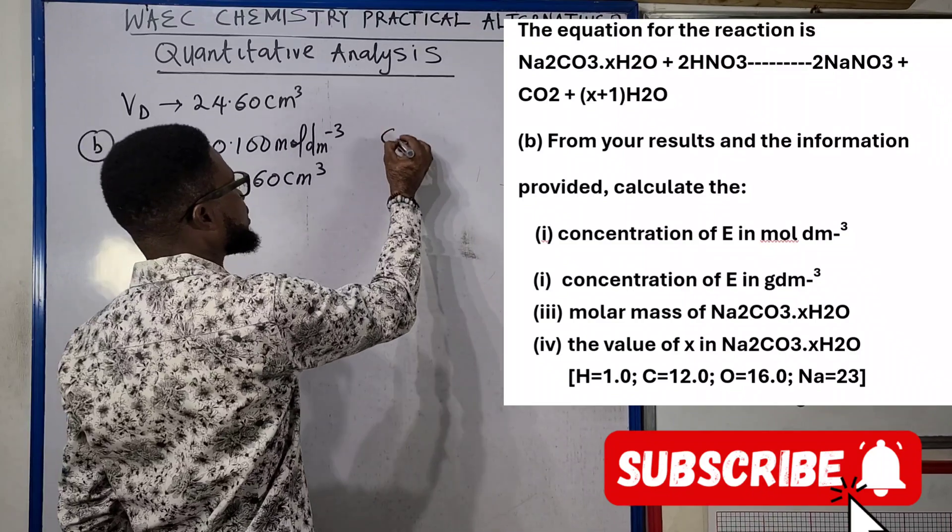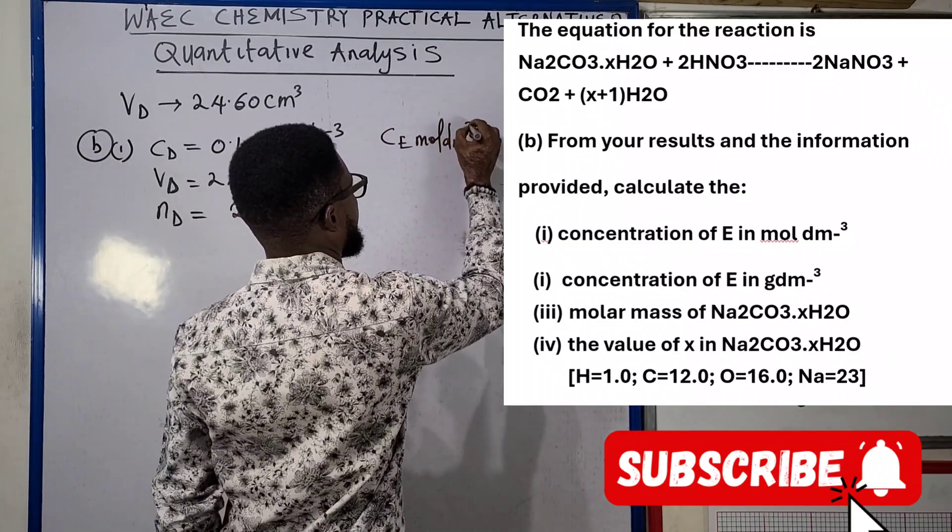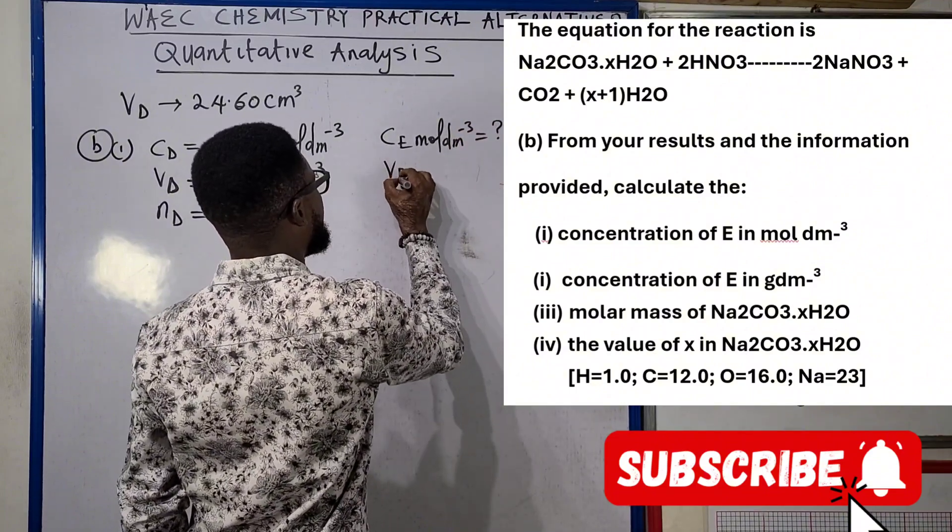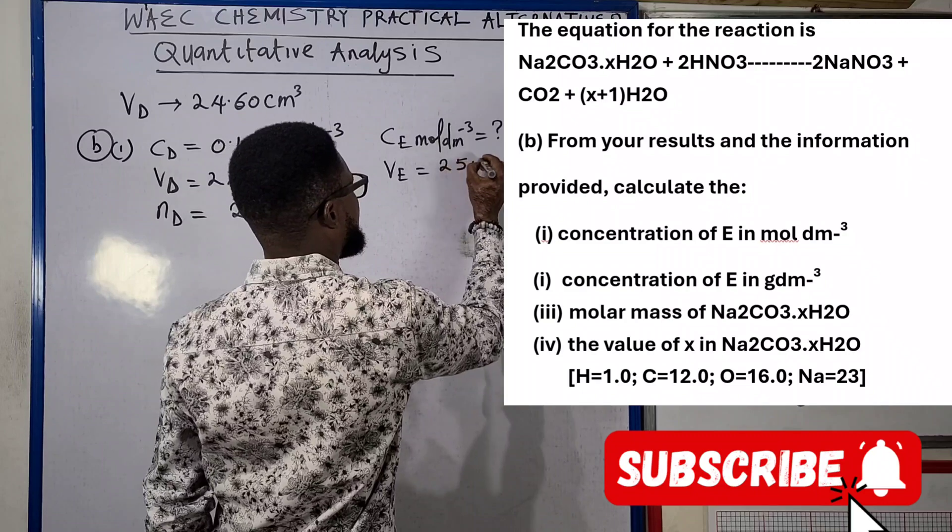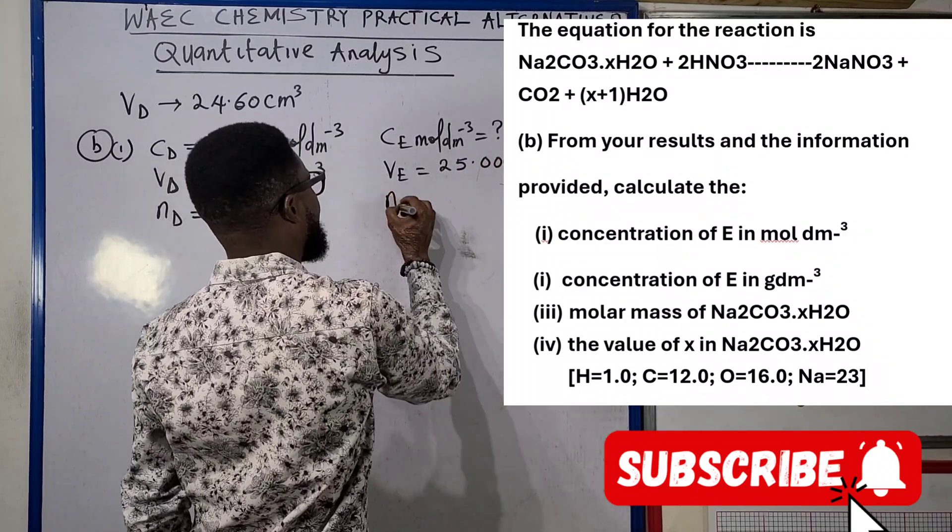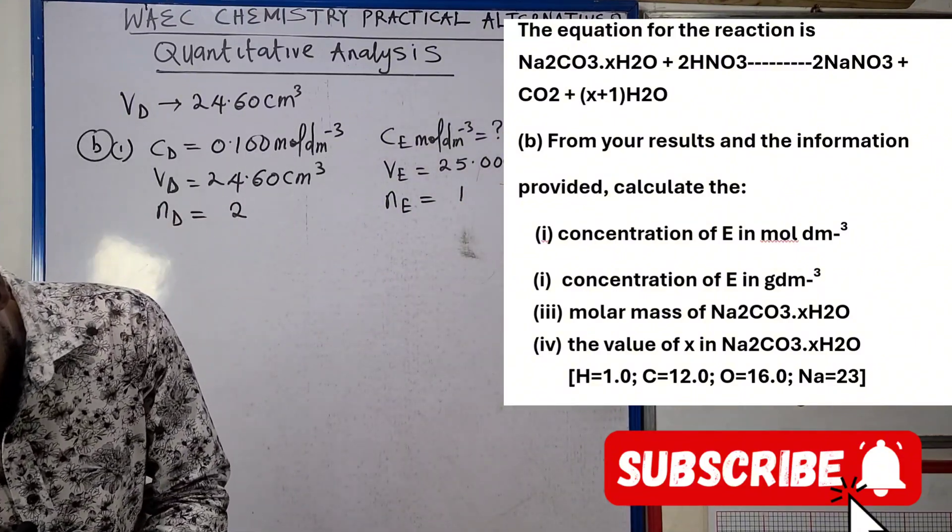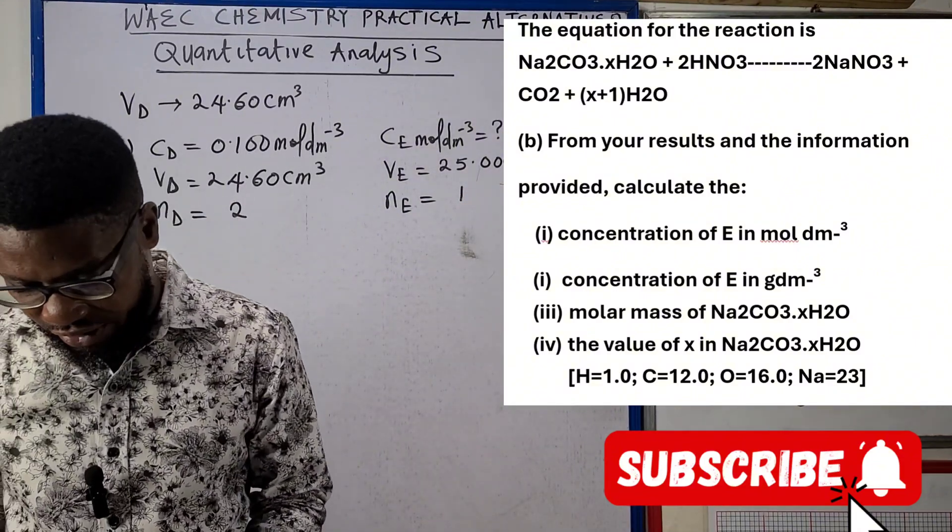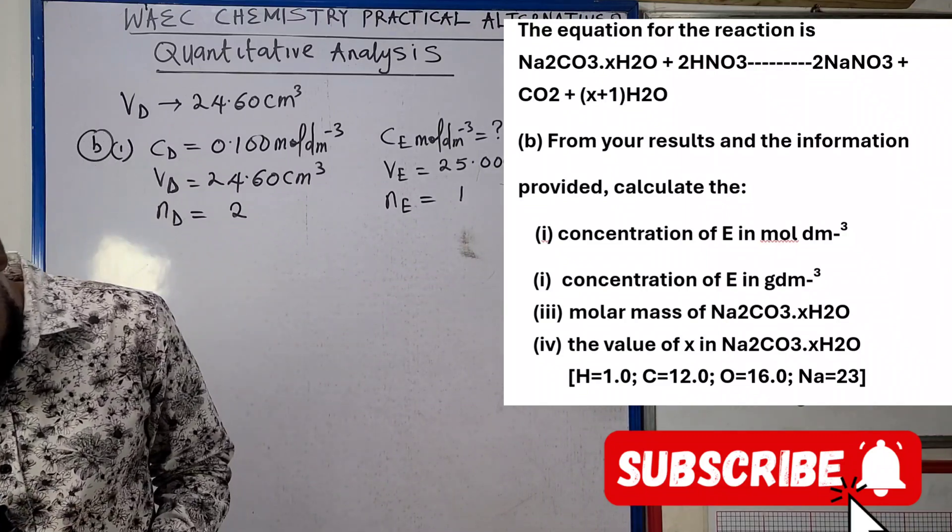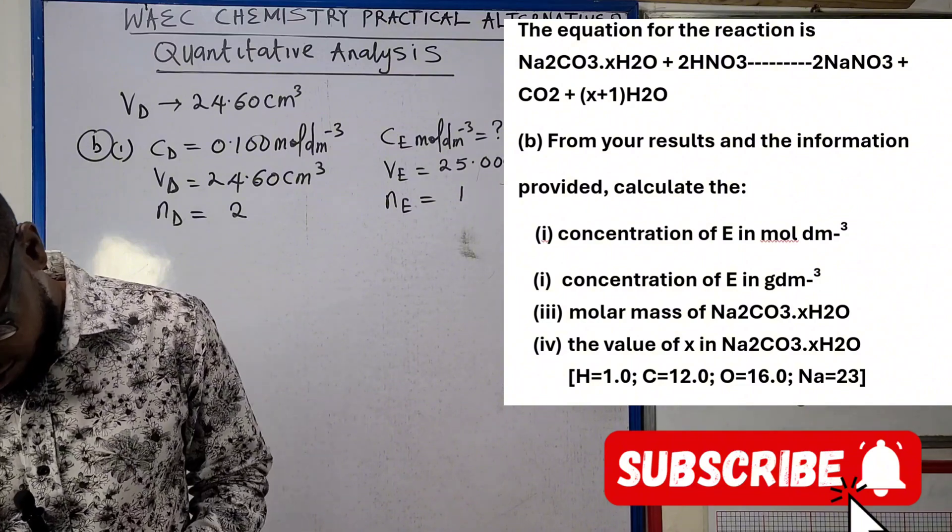We are told to look for CE in mole per dm³. Our VE is the volume of the pipette which is 25.00 cm³, and our NE for the base here is 1. Look at it very well from the equation - we only need one mole of the base.